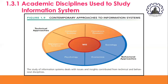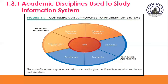The disciplines contributing to the behavioral approach are psychology, economics, and sociology. Sociologists study information systems with an eye toward how groups and organizations shape the development of systems and how systems affect individuals, groups, and organizations. Psychologists study information systems with an interest in how human decision-makers perceive and use formal information. Economists study information systems with an interest in understanding the production of digital goods, the dynamics of digital markets, and how information systems change the control and cost structures within the firm.